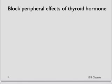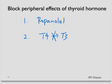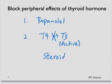The second part is to block the peripheral effects of the thyroid hormone. First, we treat the tachycardia with a beta blocker — the most often used is propranolol. Secondly, we try to inhibit the peripheral conversion of T4 to T3. Since T3 is the active form, we do this by giving a dose of glucocorticoid steroids.